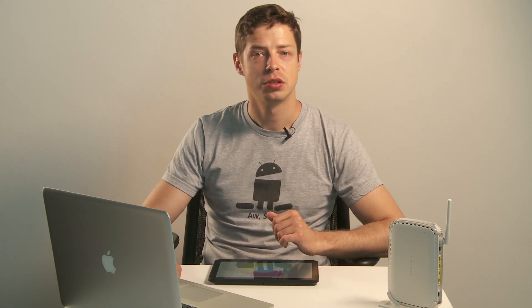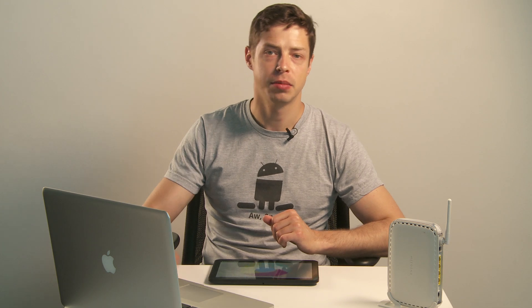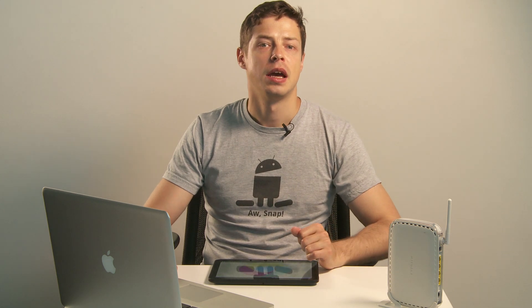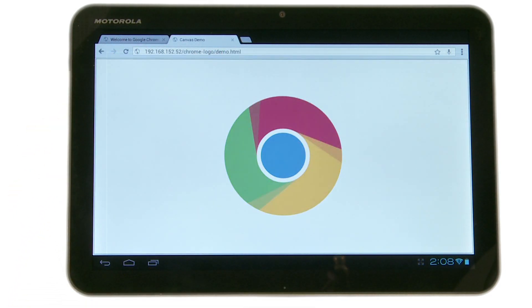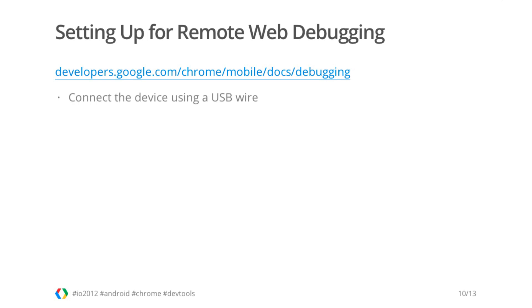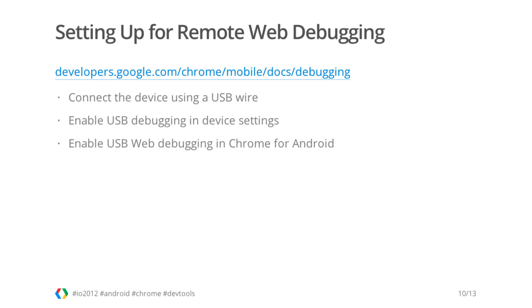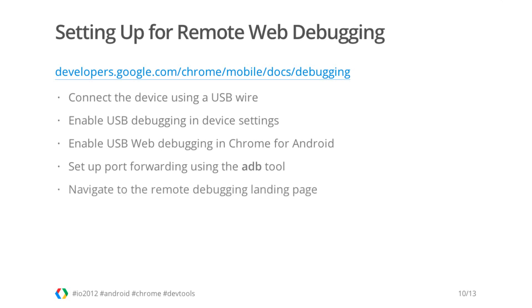Setting up for remote web debugging is really easy. First, you need to make your website accessible to your mobile device — I'll connect my laptop and tablet to the same Wi-Fi router. With the website running on my laptop, I need to know my laptop's IP address, then enter it in Chrome on the tablet. For remote web debugging setup, these steps are documented on the Google Developers site. You need to connect your device to your host machine using a USB cable, enable USB debugging in device settings, and enable USB web debugging in Chrome. Chrome for Android will open a port for remote debugging, and you will need to forward this port to your host machine. You will need Android SDK platform tools installed, and after that you can navigate to the remote debugging landing page from your desktop Chrome browser.